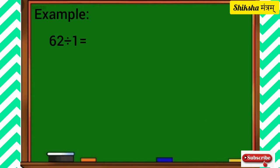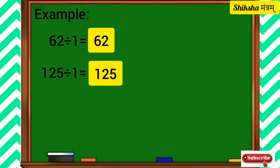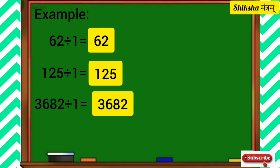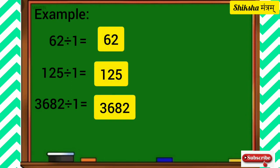62 divided by 1 is equal to 62. 125 divided by 1 is equal to 125. 3682 divided by 1 is equal to 3682. In all the cases, the quotient is the number itself.